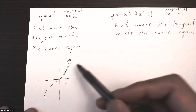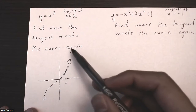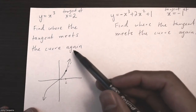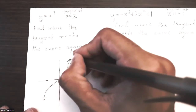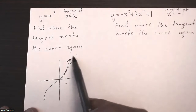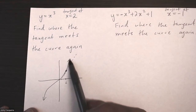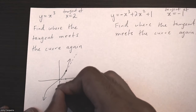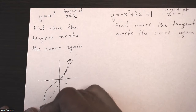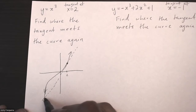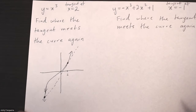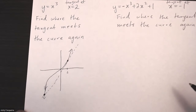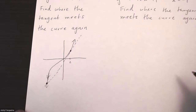We need to find where this tangent line meets this curve again. If we extend the line on the right side, it's never going to hit this curve because the curve gets steeper and steeper. But if we extend down on the left side, there'll be a certain point where the line hits the curve again, and we need to find that point.